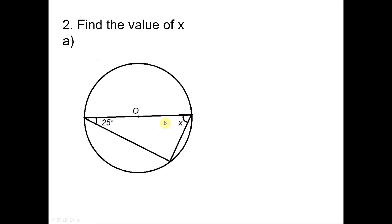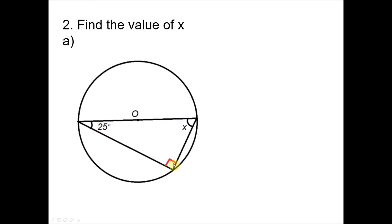Question 2A: The line passing through the center is a diameter. When an angle is subtended by the diameter, that angle is always 90°. Therefore X equals 180° minus 90° minus 25°, giving X equals 65 degrees.